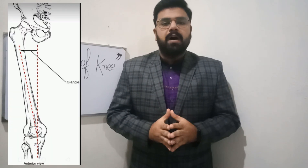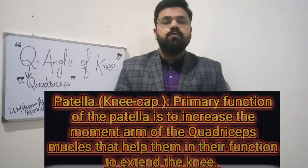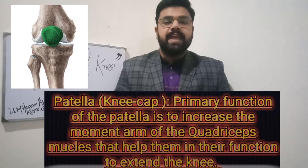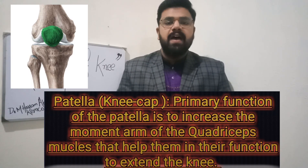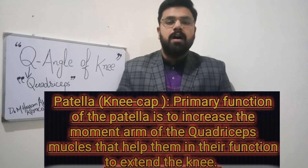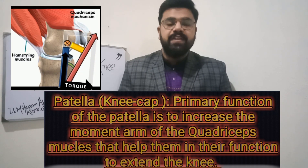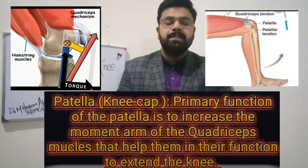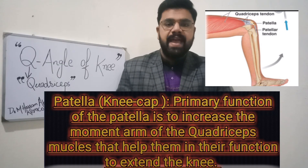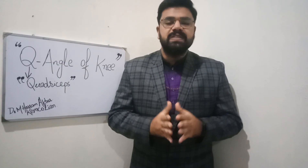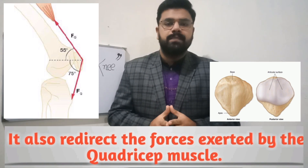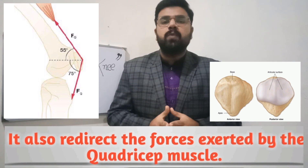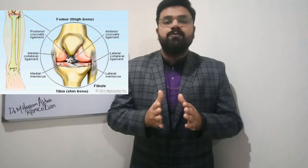Before coming to the Q angle of the knee joint, we will discuss the core function of the patella or kneecap. The primary function of the patella is to increase the movement arm of the quadriceps muscle, helping them in their function to extend the knee. It also redirects the forces exerted by the quadriceps muscle in the knee joint complex.